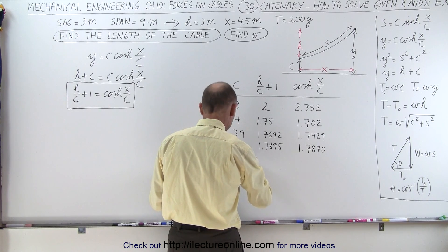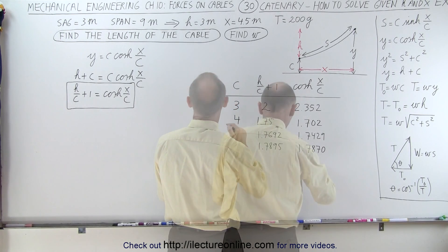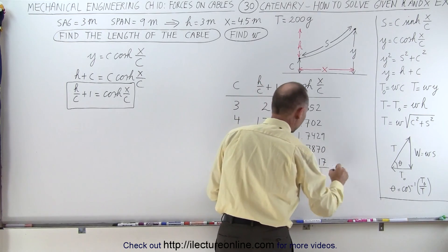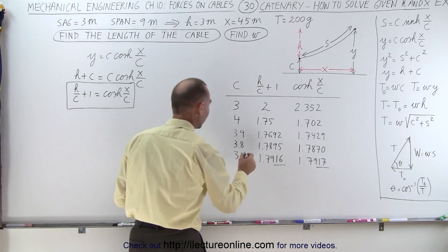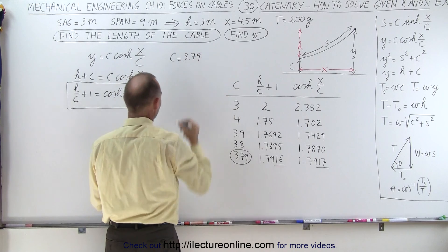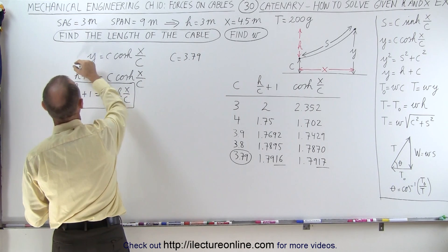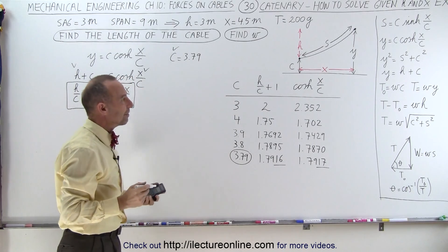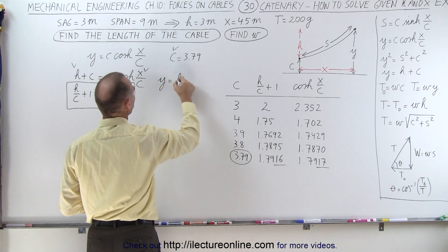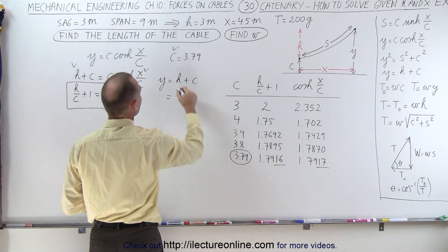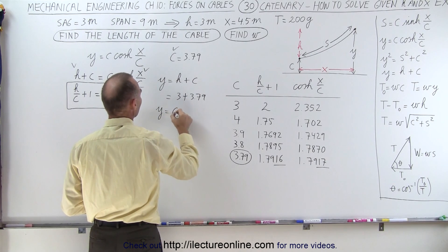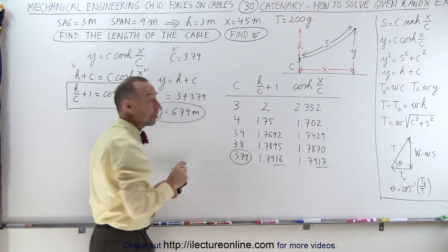At C equal to 3.79, H over C plus 1 gives approximately 1.7917, and the hyperbolic cosine of X over C also gives approximately 1.7917 — that's close enough for our purposes. So we let C equal 3.79. Now we know both H and C, so we can find Y. Since Y equals H plus C, with H equal to 3 and C equal to 3.79, Y equals 6.79 meters.